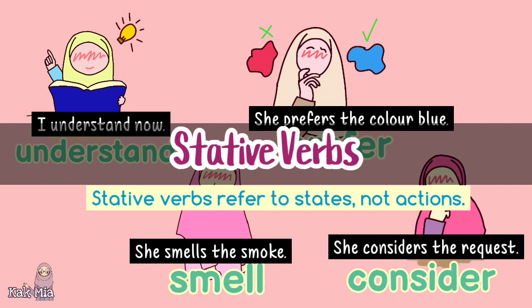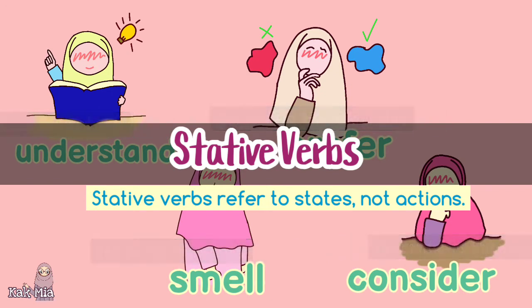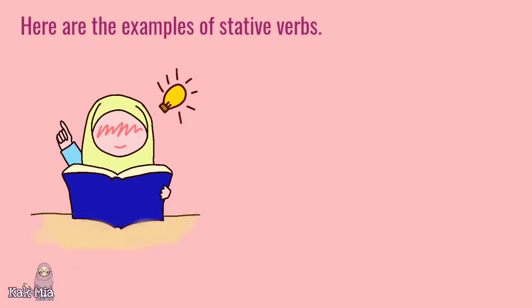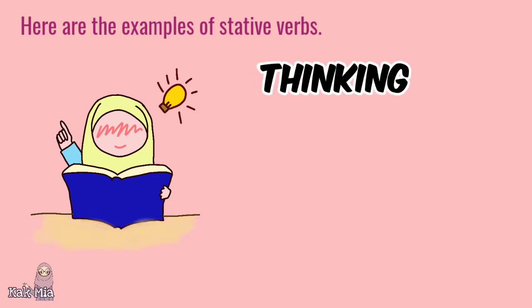Here are the examples of stative verbs. The first type is under the category of thinking. For example: know, understand, and remember.